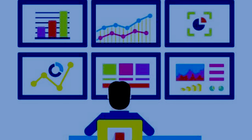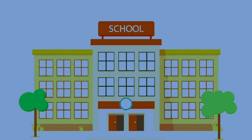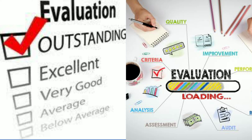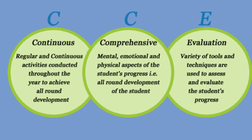Academic progress of a student is one of the main objectives of the evaluation system in a school. Evaluation system is an integral, indivisible and undivided part of the teaching-learning process. Evaluation is a broader term than measurement. It includes both tangible and intangible qualities. School-based evaluation of students should be continuous and comprehensive, covering all features of students' development.